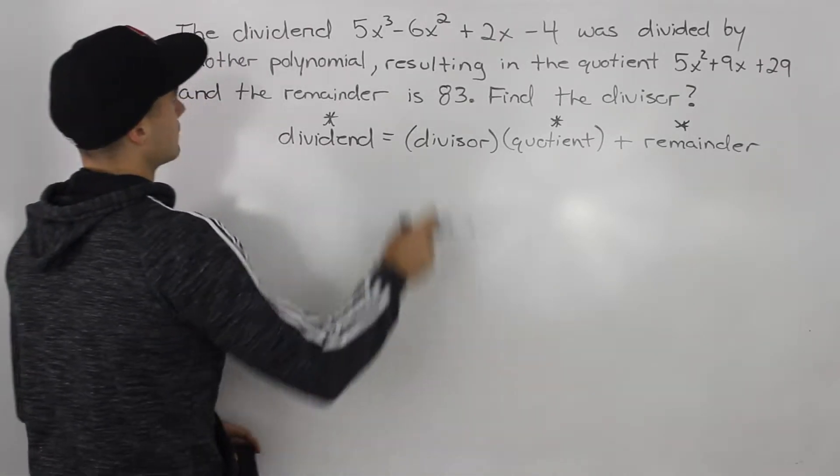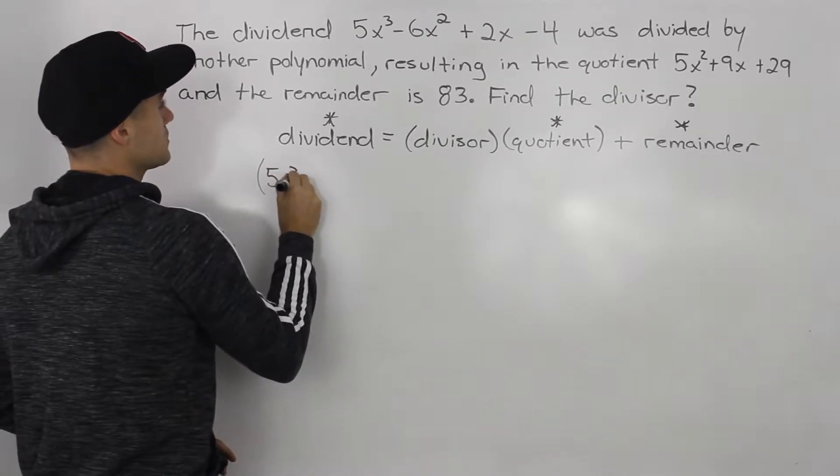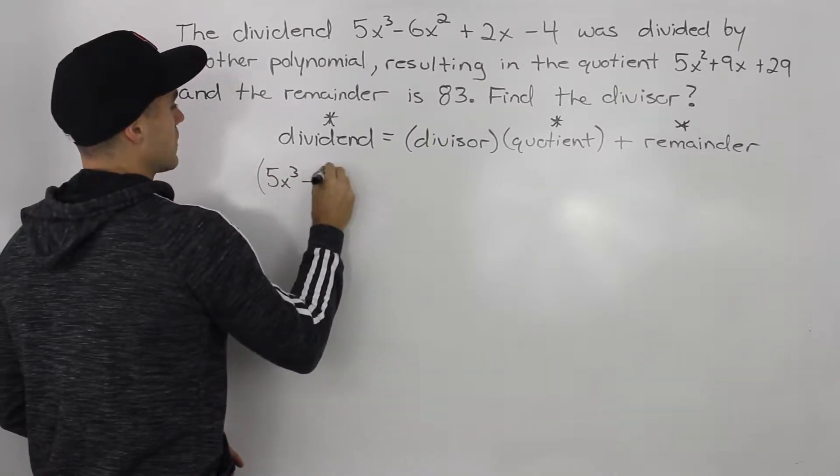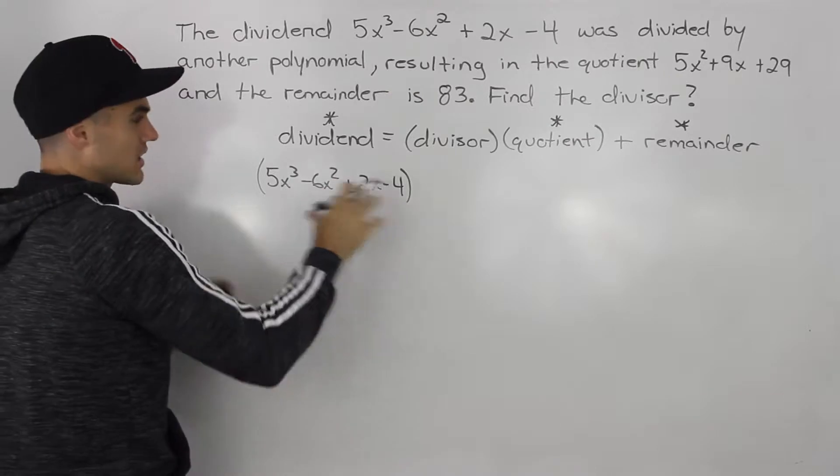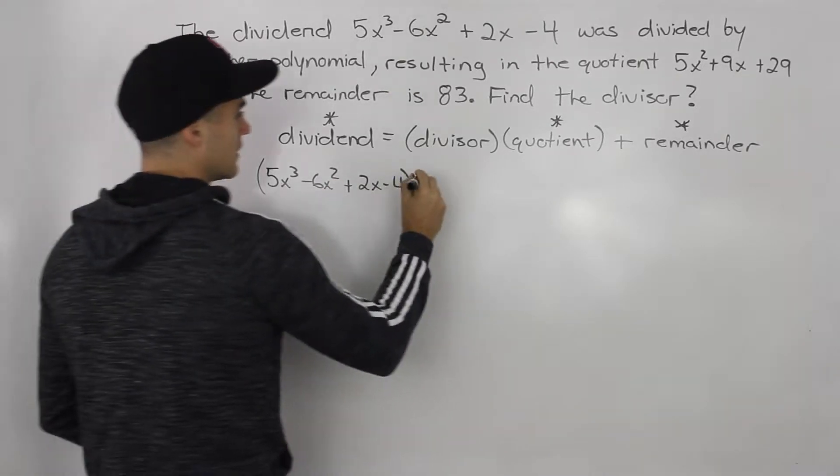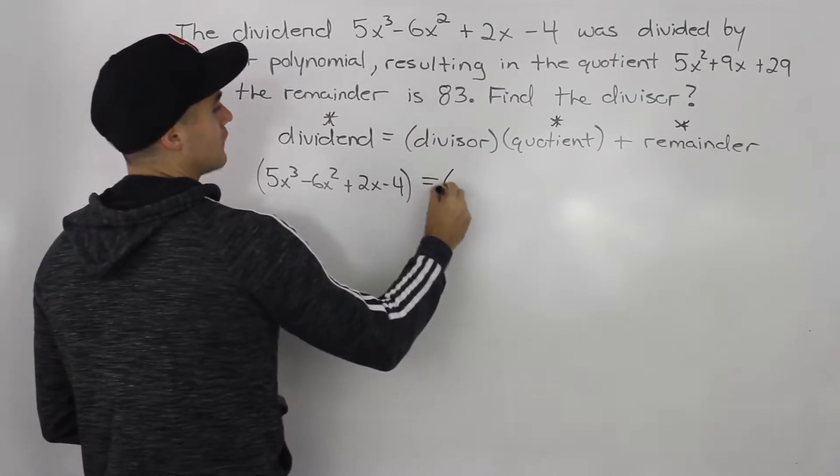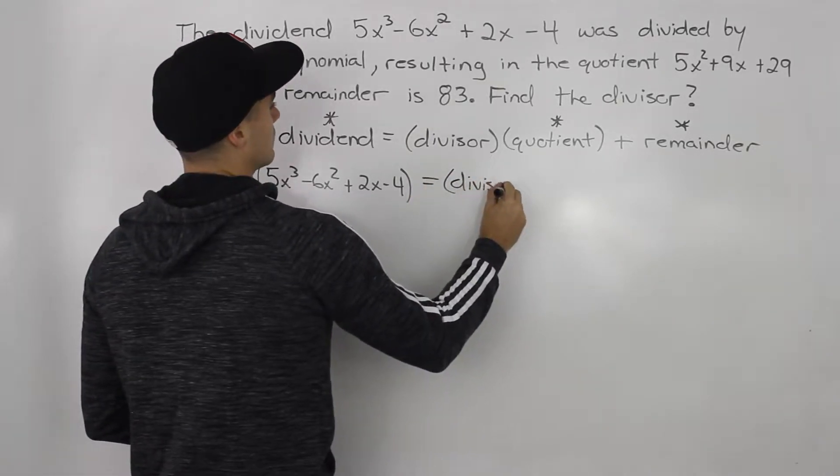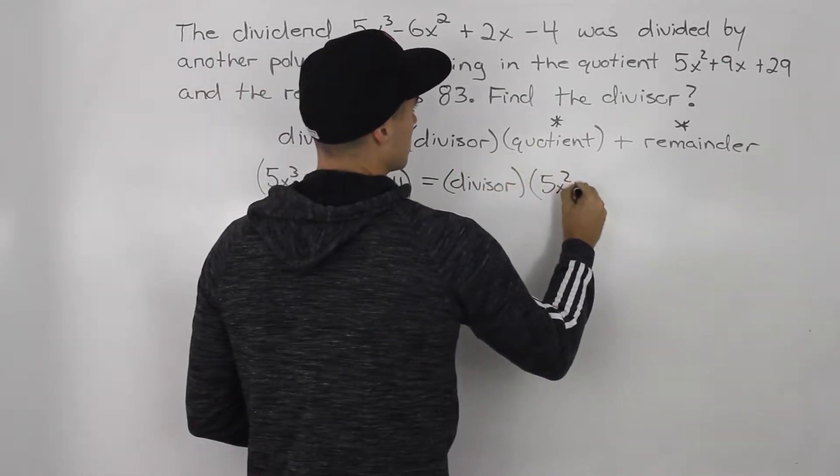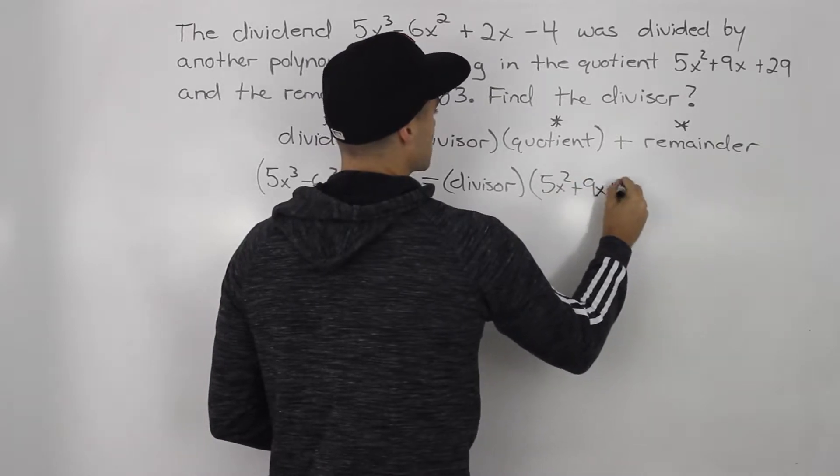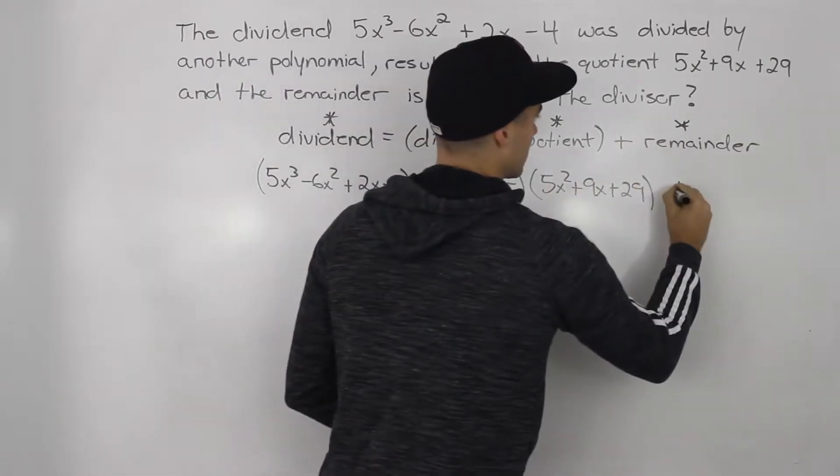So let's plug everything in. So the dividend, let's put it in brackets. So we got 5x cubed minus 6x squared plus 2x minus 4. I always like to put everything in brackets initially just in case we have to move things around. It's easier to see what that full unit is that we can move around. Now the divisor, we are solving for that. Quotient is given, that's 5x squared plus 9x plus 29. And then plus the remainder, the remainder is given as 83.